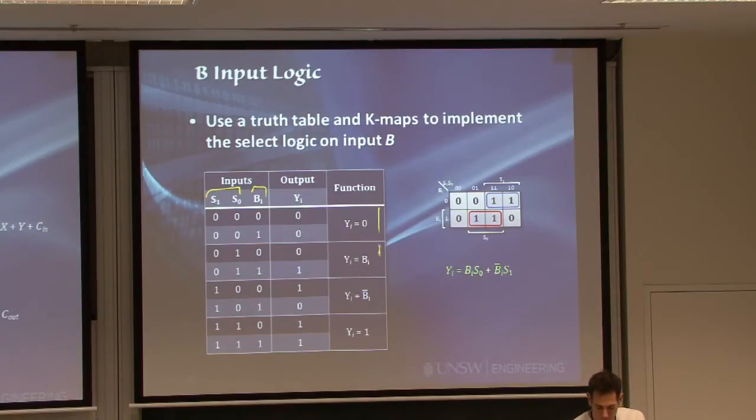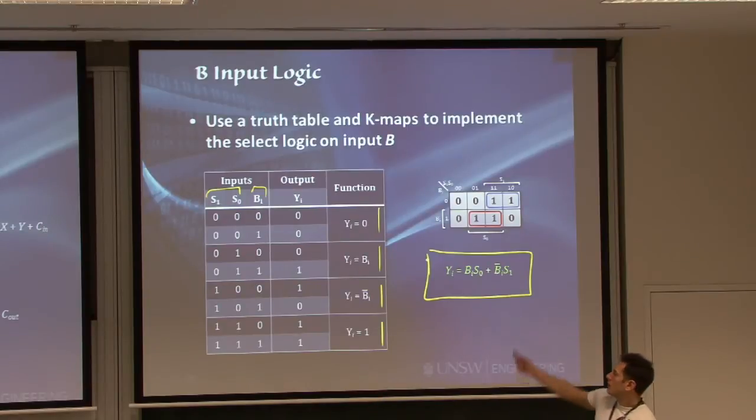So for every operation selection that we have, B can either be either 0 or 1. We have the four different operations that we might want: either all 0s if you want to transfer B as it is, if you want to invert B, if you want all 1s. We will then come up with a circuit for Y, or a Karnaugh map for Y, as a function of my select 0 and select 1 and my B_i. I stands for the particular bit that you're using. And you can come up with this equation.